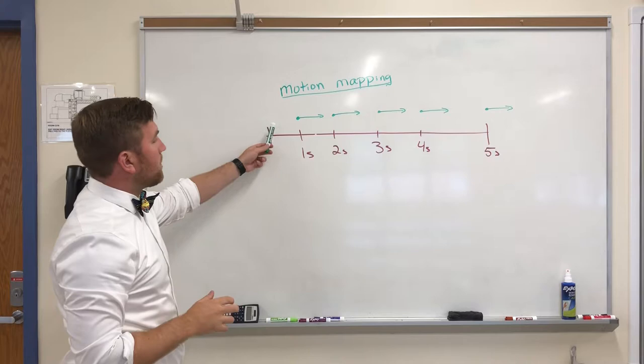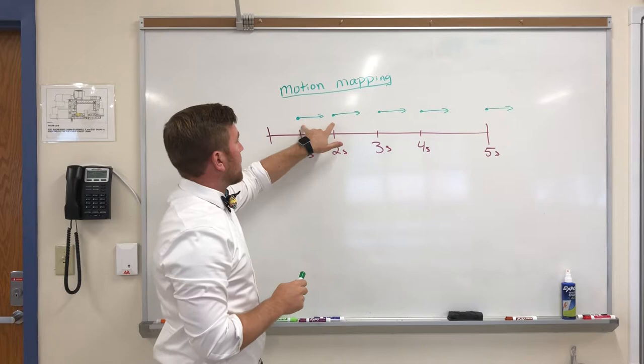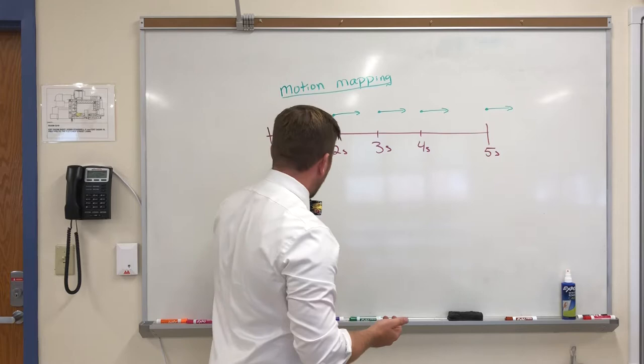When we motion map, we're indicating not only time, but placement or position, and then the arrow can represent velocity.